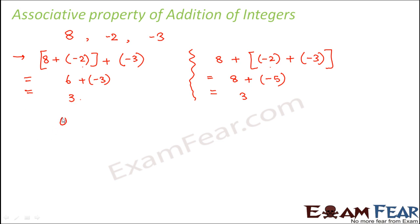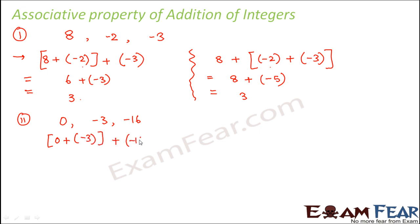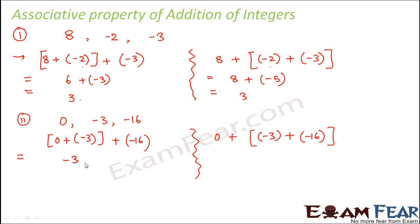Let us take another example with another set of three integers: 0, minus 3, and minus 16. In the first case: 0 plus minus 3 equals minus 3, plus minus 16 equals minus 19. In the second case: 0 plus minus 3 plus minus 16 gives 0 plus minus 19, which is also minus 19. Here again both cases give the same result.